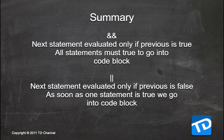As a summary: when using double ampersand (AND), the next statement is evaluated only if the previous is true, and all statements must be true to enter the code block. When using OR, the next statement is evaluated only if the previous is false, and as soon as one statement is true, we enter the code block.